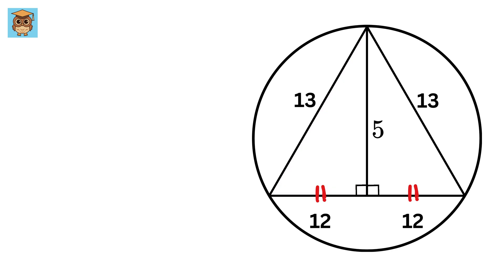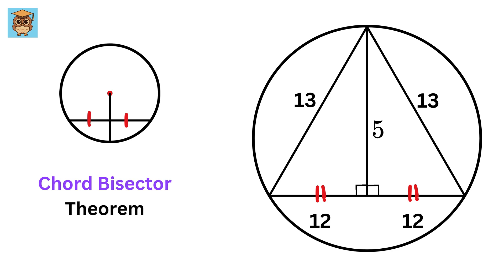Suppose we have a circle with a chord like this and this is the center of the circle. Draw a perpendicular from this center on this chord. Then this perpendicular will also bisect the chord—it is known as chord bisector theorem. We have already established that this line is a perpendicular bisector of this side of the triangle, and therefore the center of this circle will lie on this line.